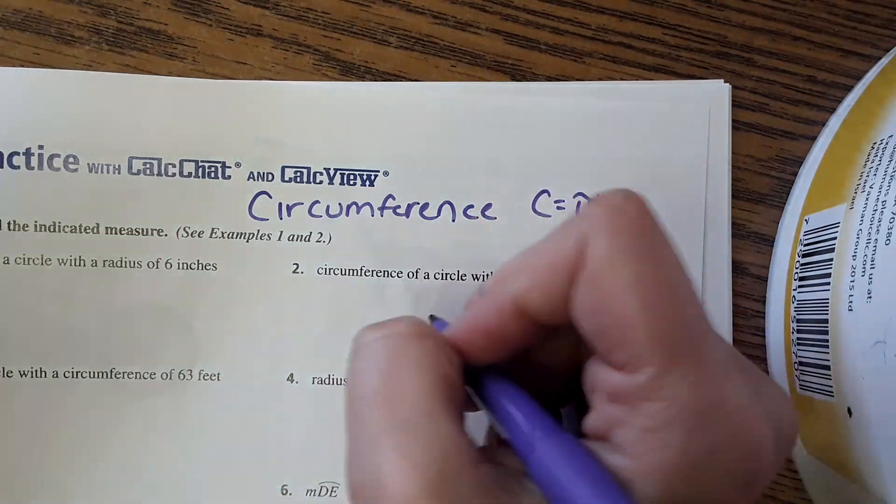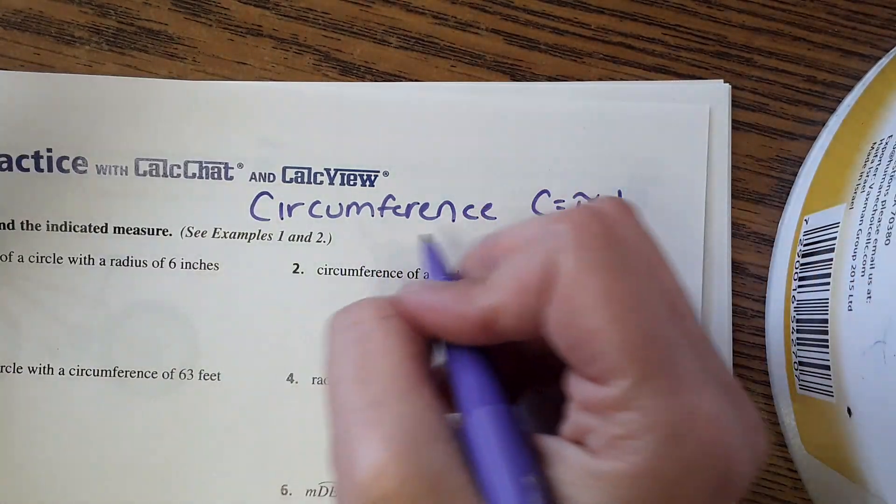For pi we're going to use the actual pi button and then round your answer to the hundredth.